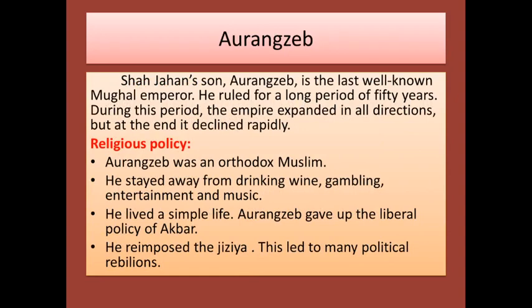Shah Jahan's son Aurangzeb is the last well-known Mughal emperor. He ruled for a long period of 50 years. During his period, the empire expanded in all directions, but at the end it declined rapidly.